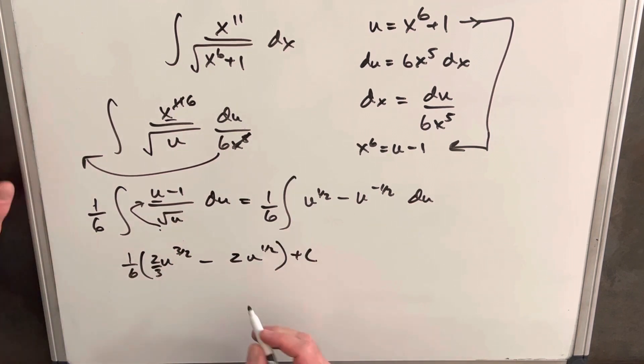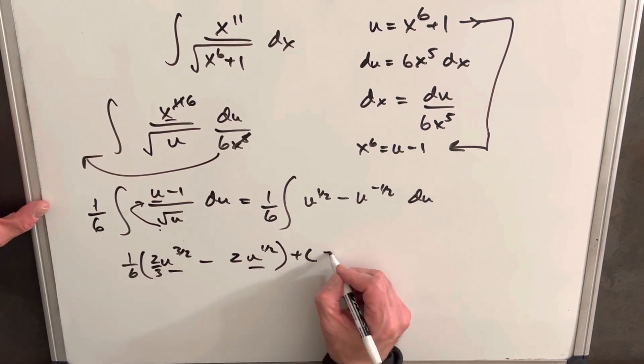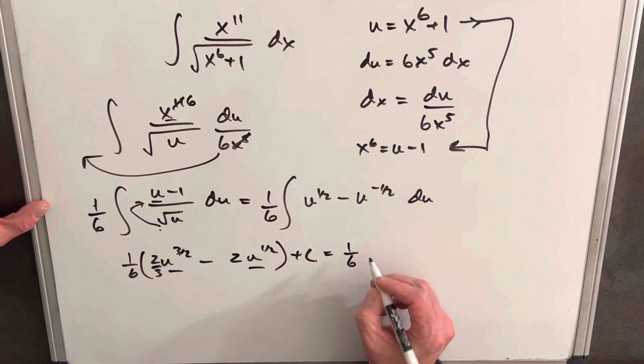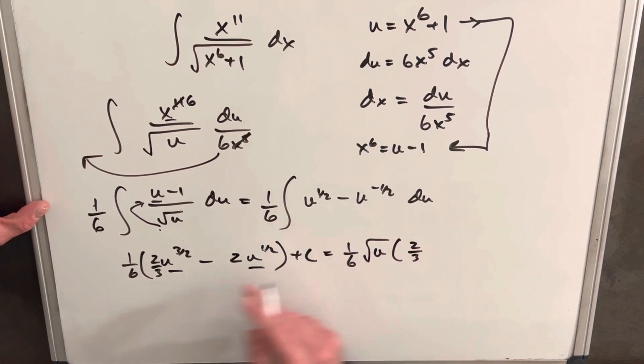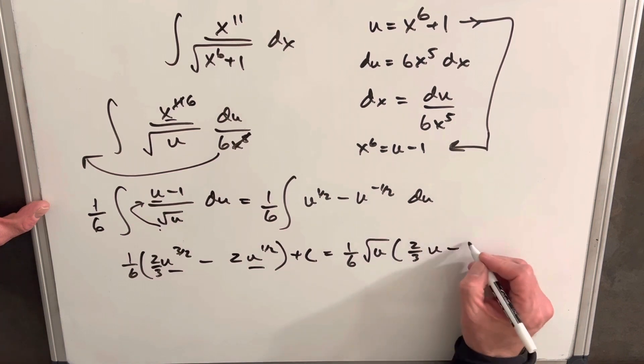And then before I back substitute, I think what I want to do is factor out a square root of u. So we're going to have 1 6th square root of u, 2 3rds. Factoring a square root of u out here, we're just going to have u minus 2.